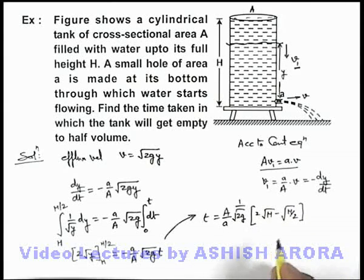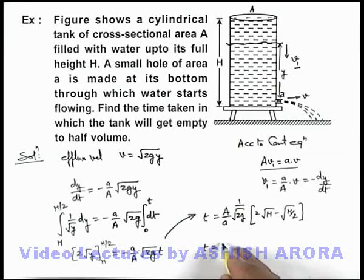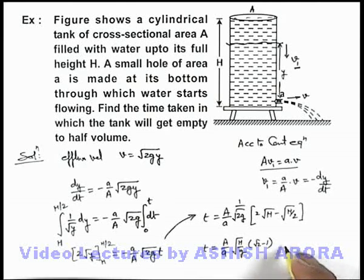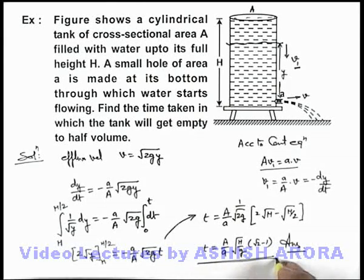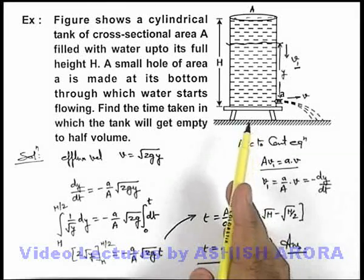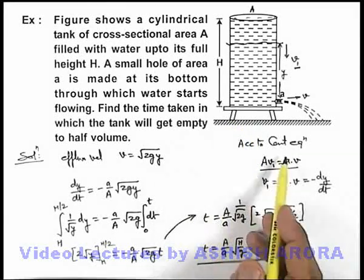Further, if the result is simplified, this time can be given as (A/a)√(H/g) multiplied by (√2 - 1). That is the answer to this problem, or this is the time in which the water level will reduce from H to H/2, or half of the volume will get empty.